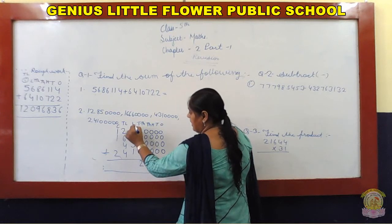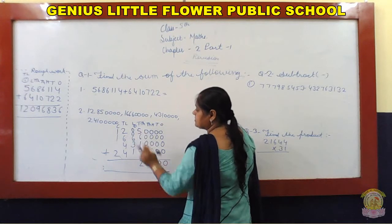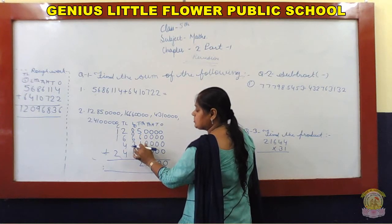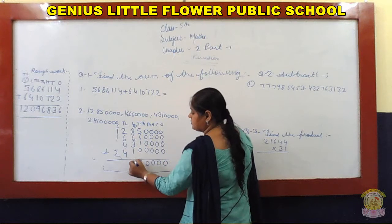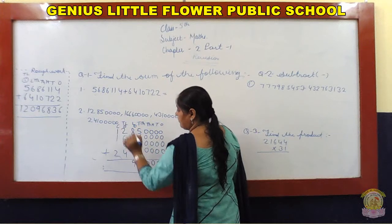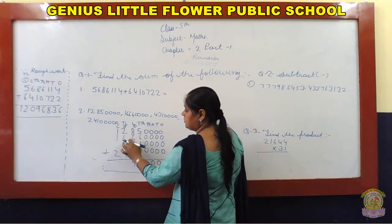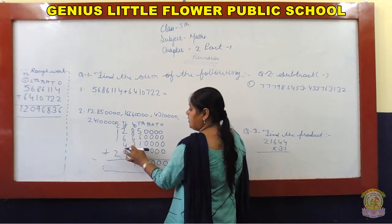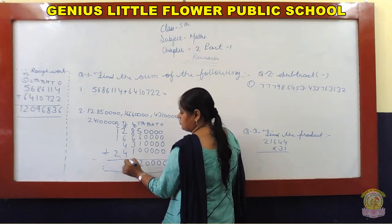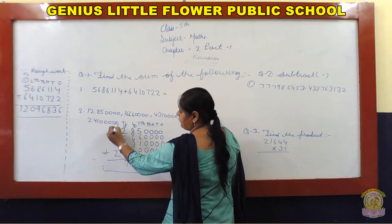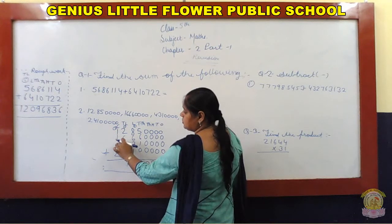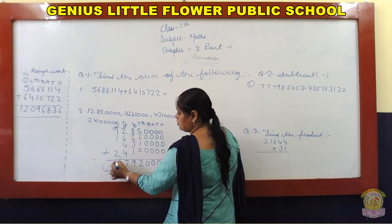One carry over. Eight plus one: nine. Nine plus six: fifteen. Plus three: eighteen. Plus one: nineteen. One carry over. Two plus one: three. Three plus six: nine. Nine plus four: thirteen. Thirteen plus four: seventeen. One carry over. One plus one: two. Two plus one: three. Three plus two: five.